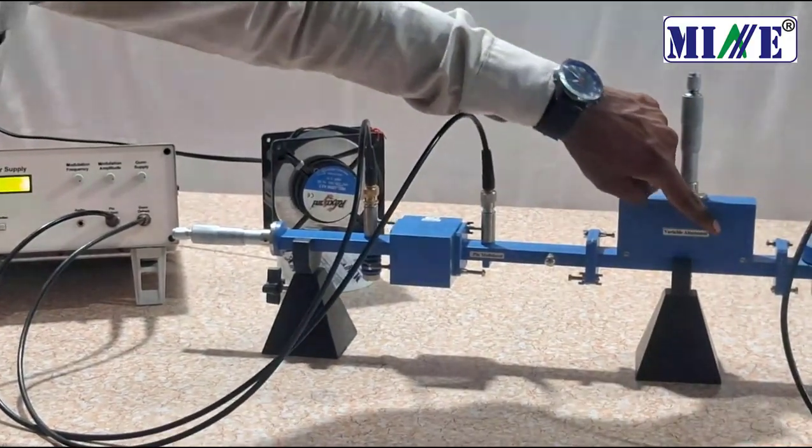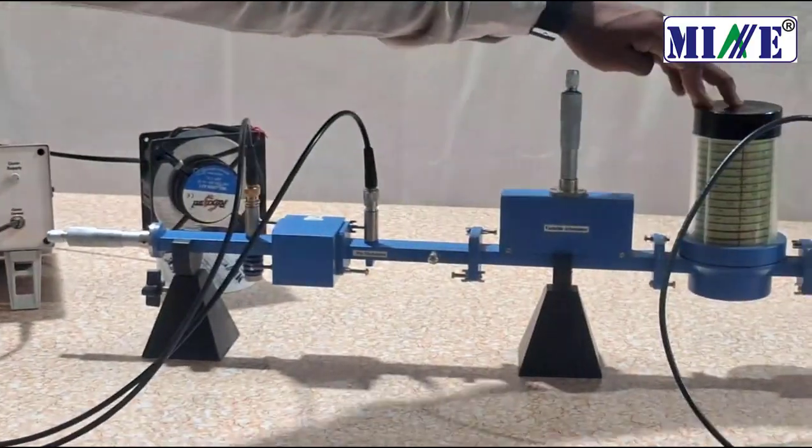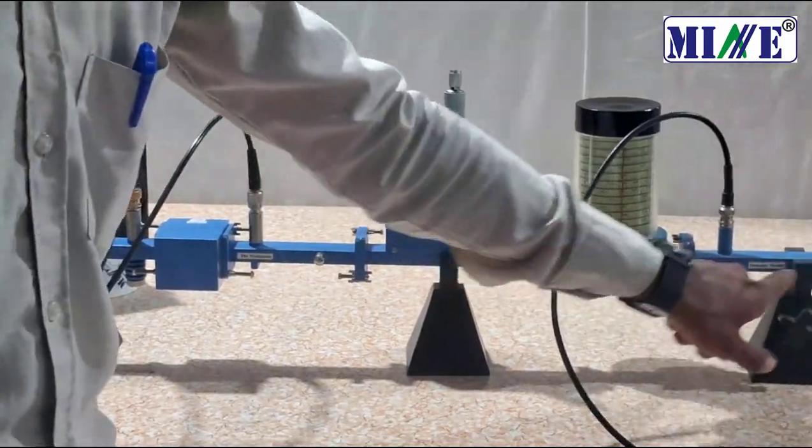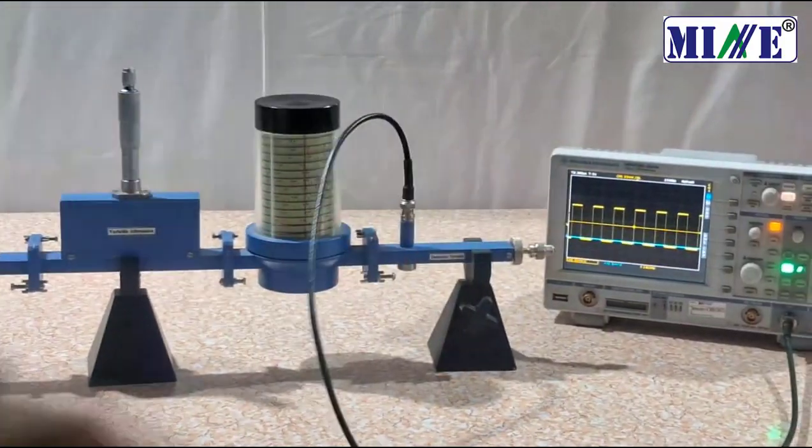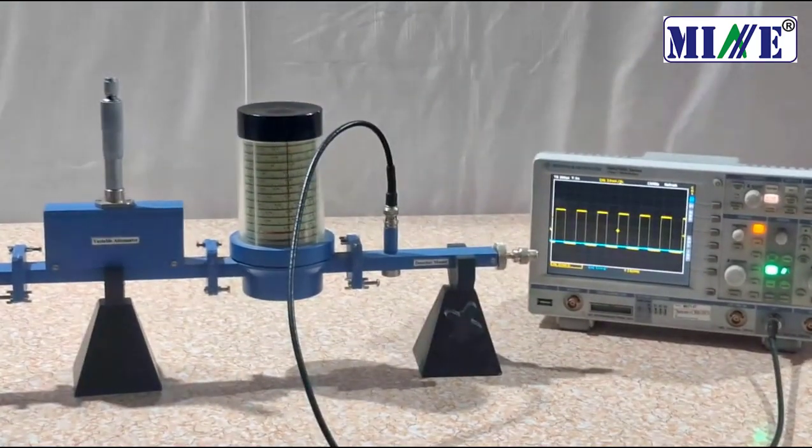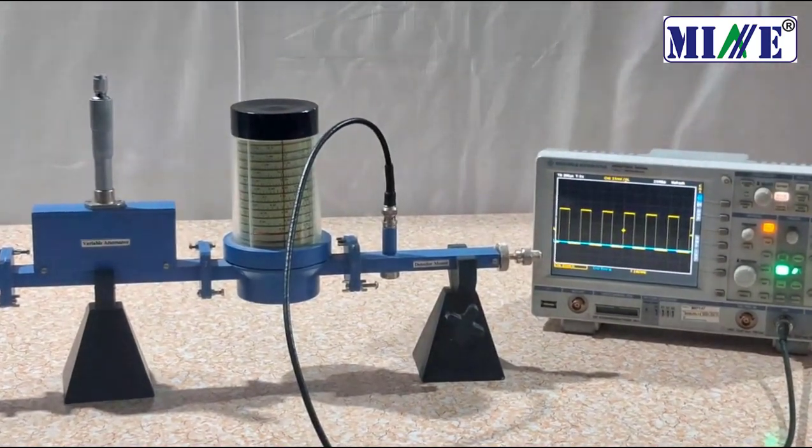Connect all components following the video. Then connect the detector mount to the DSO with a BNC to BNC cable. Then switch on all power supplies.